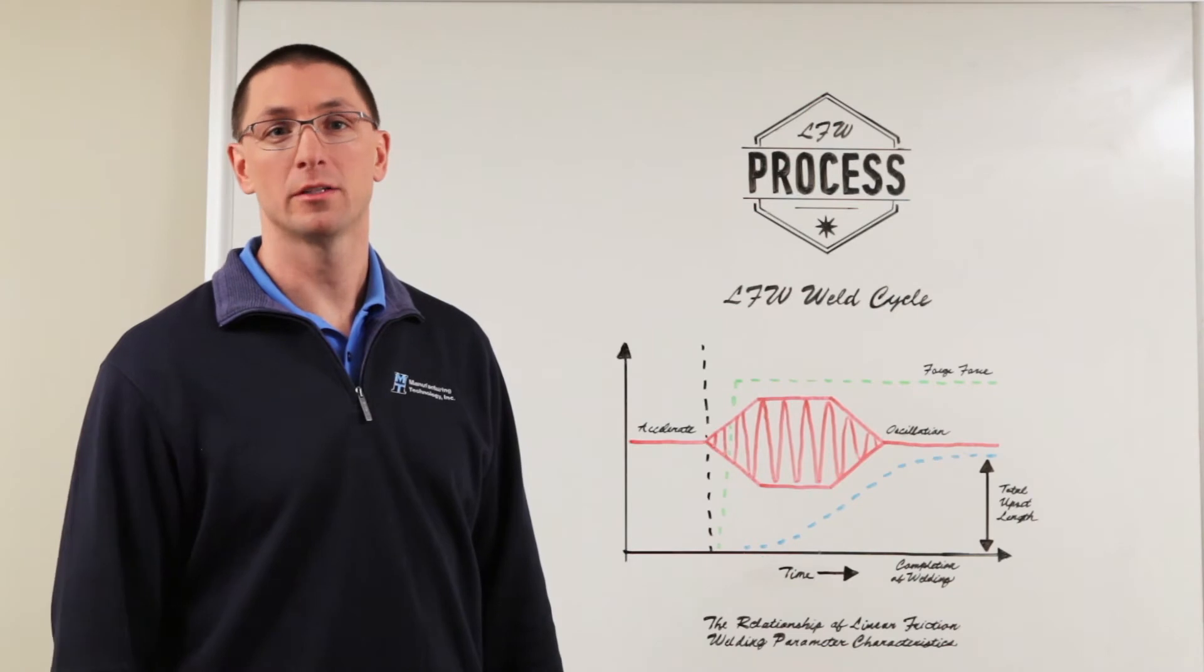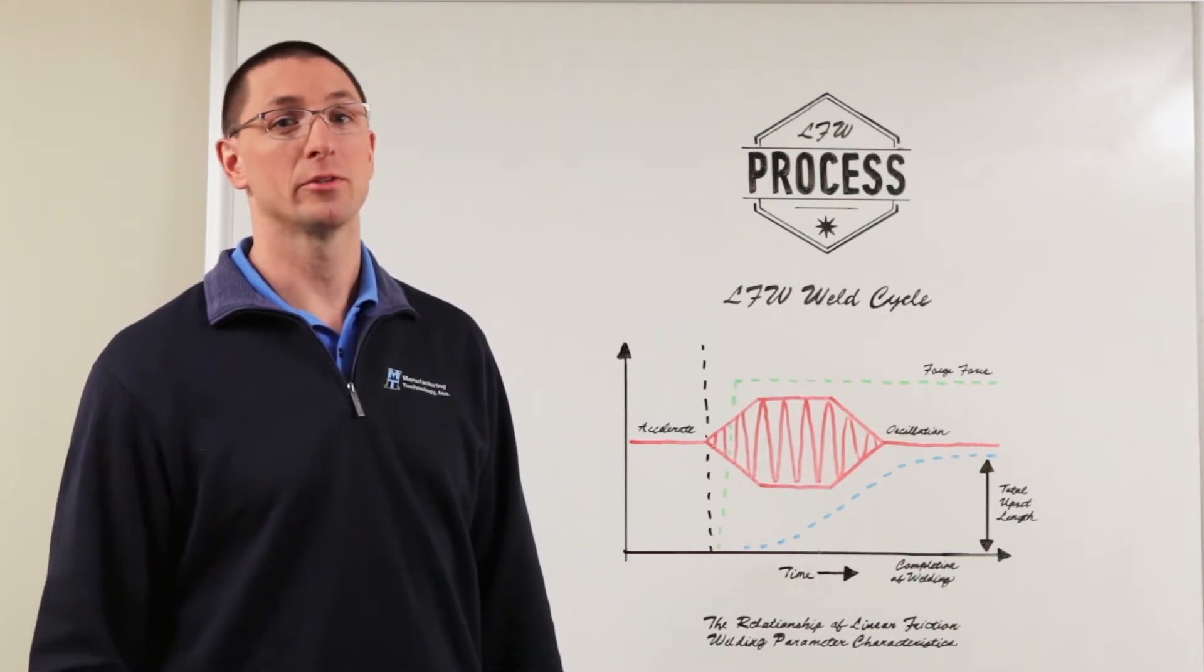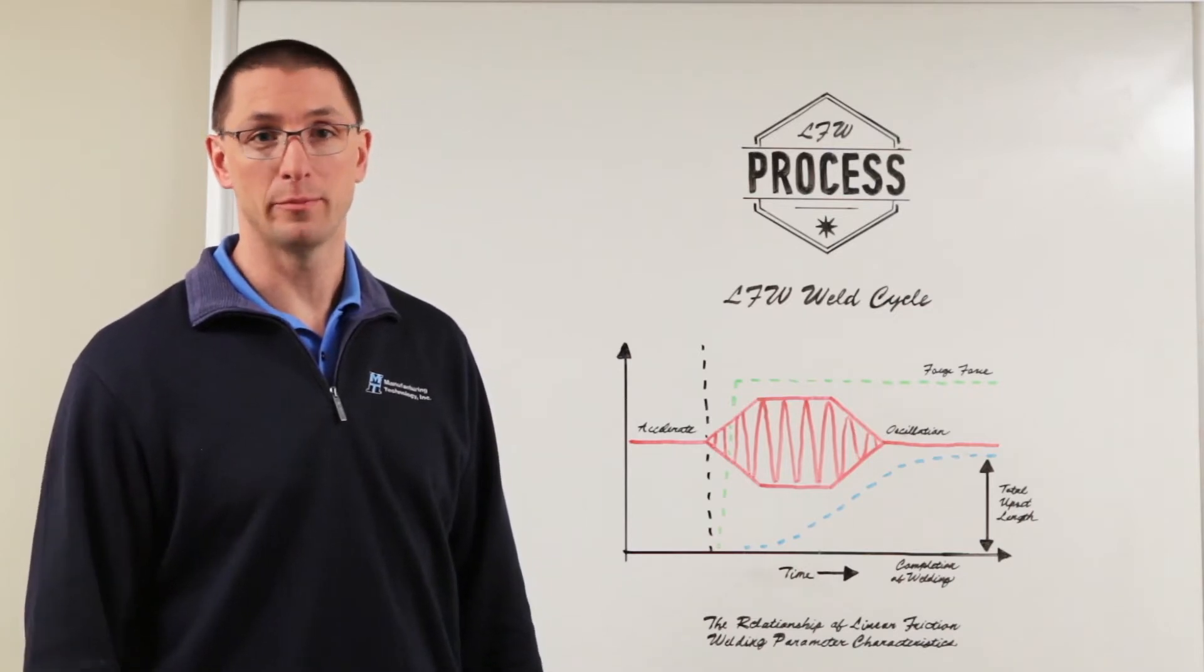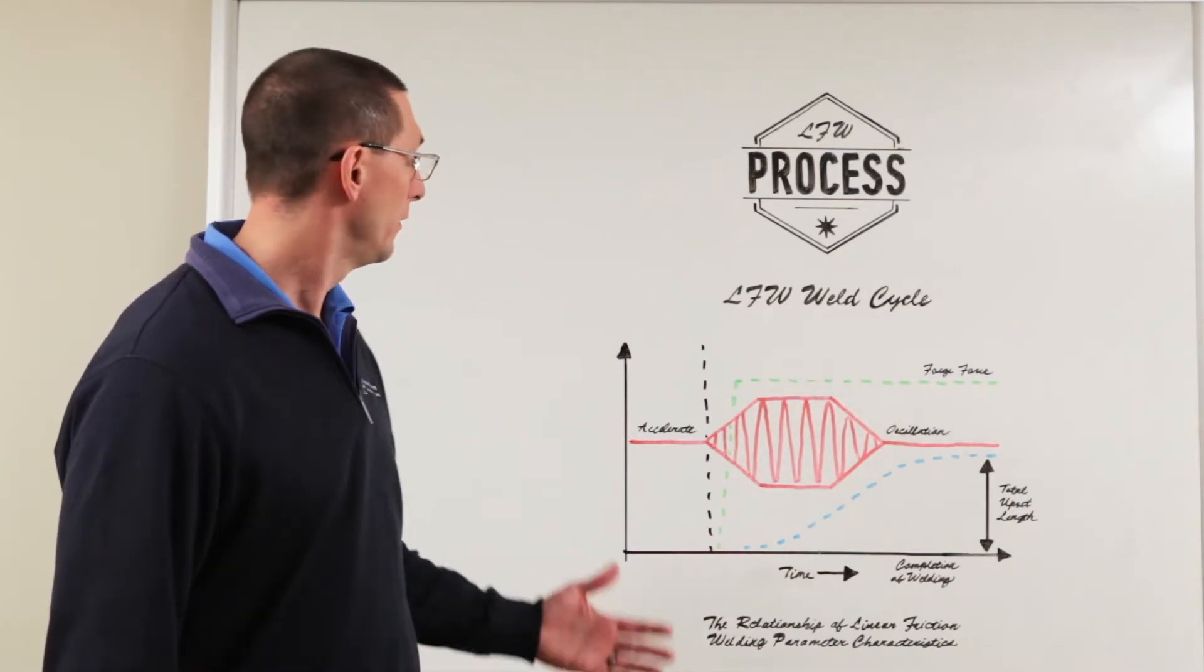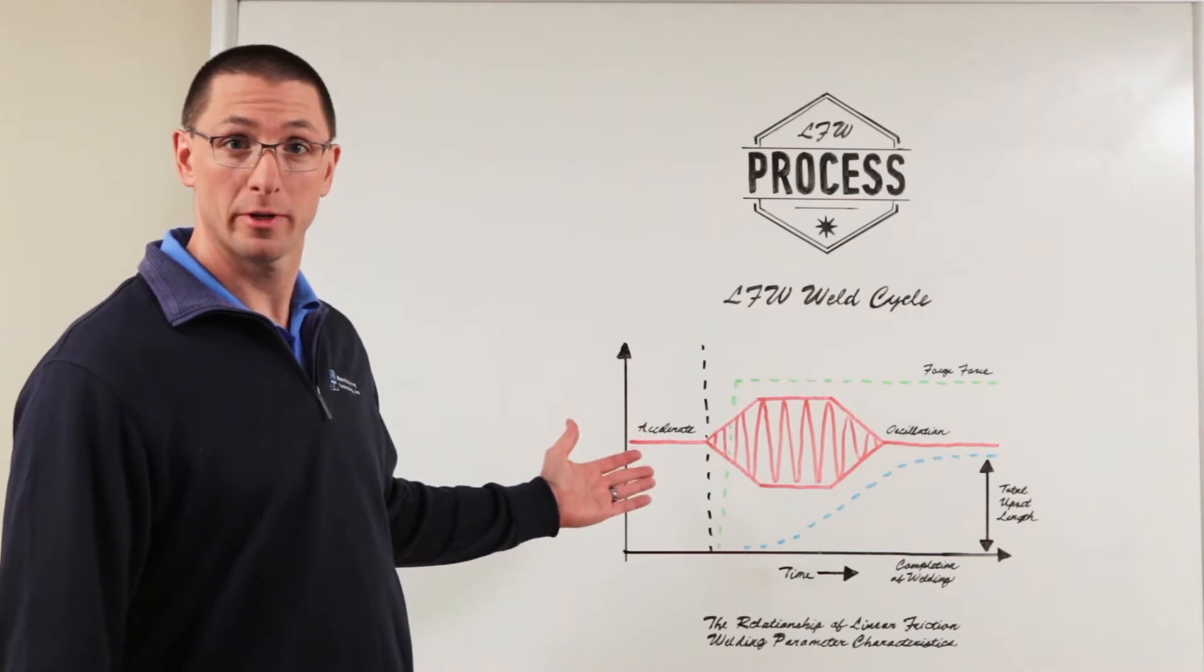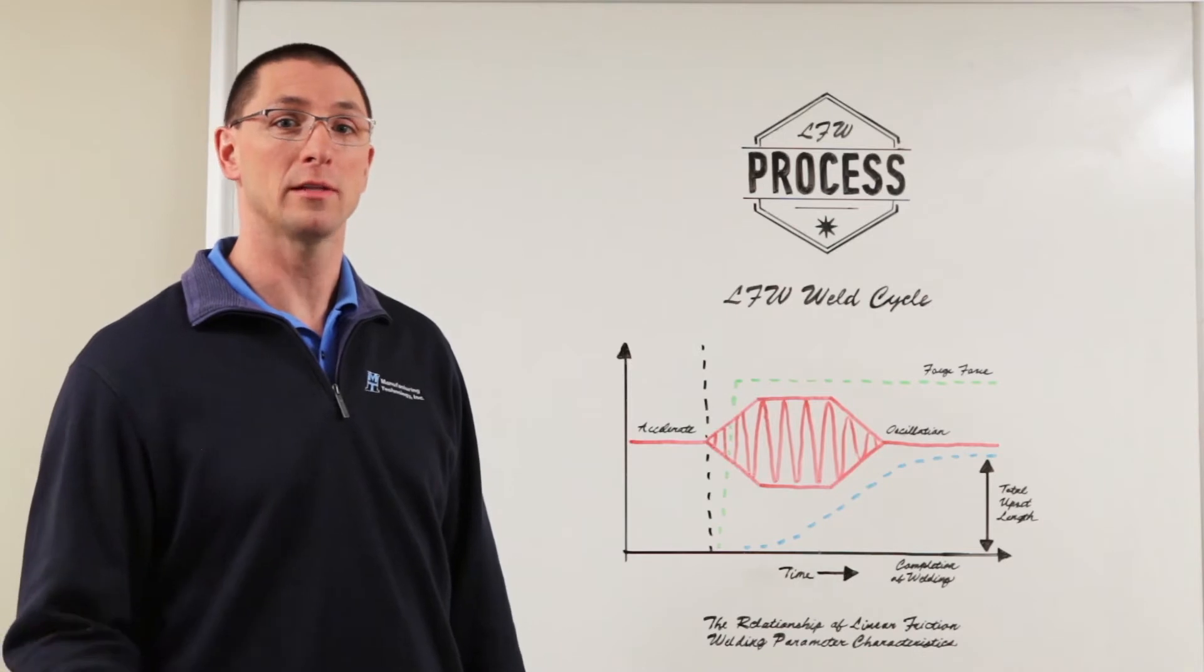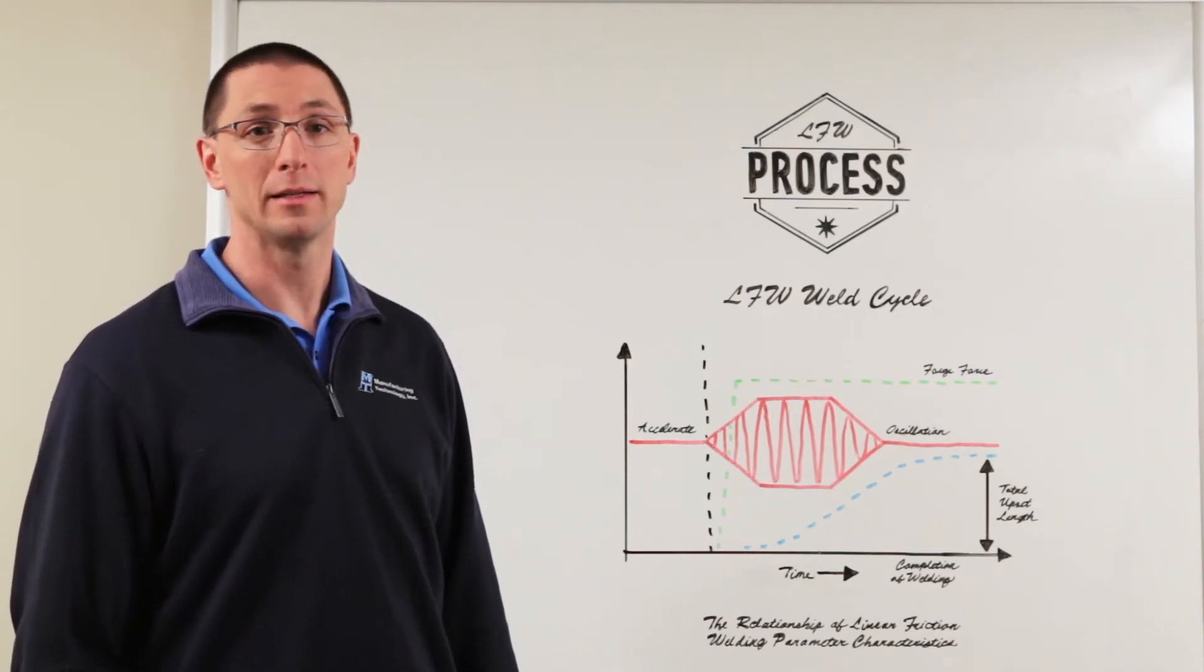Linear friction welding is very similar to rotary friction welding, specifically direct drive friction welding. And like direct drive, it's a constant energy input process. The only difference between rotary friction welding and linear friction welding is the type of relative motion that we're using. In this case we're oscillating the moving piece on a linear path.